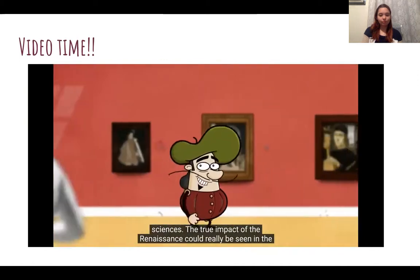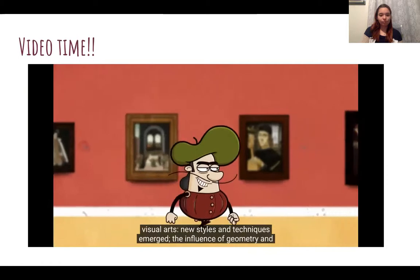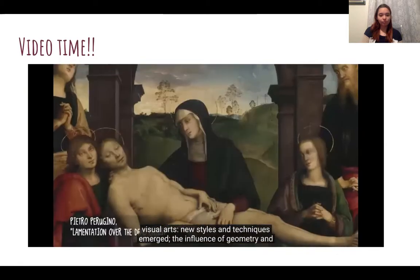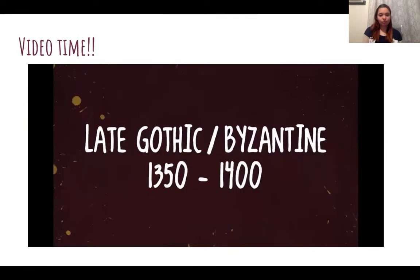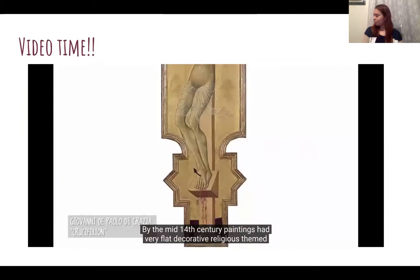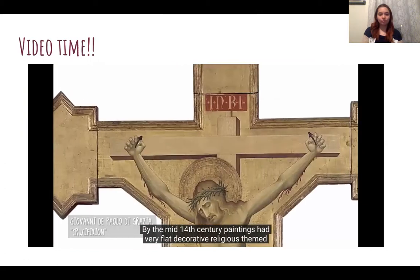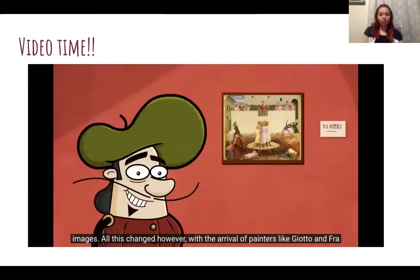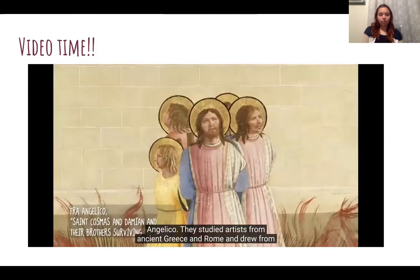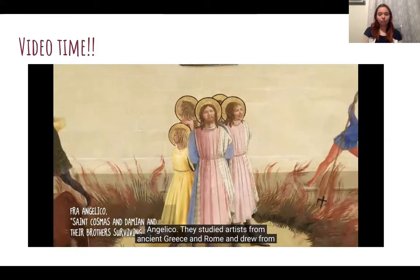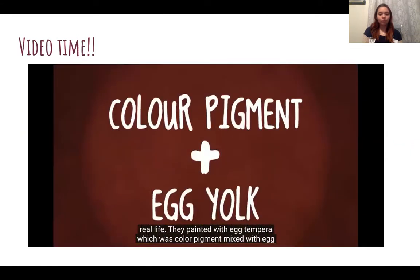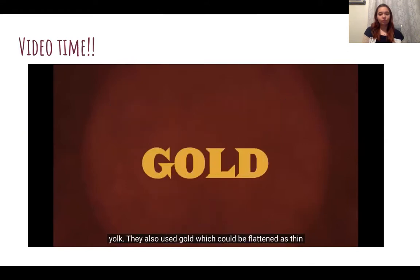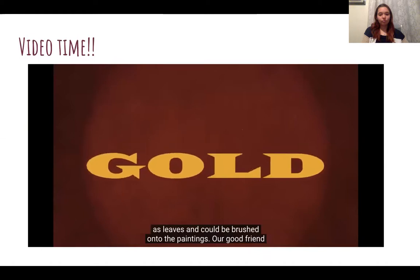The true impact of the Renaissance could really be seen in the visual arts. New styles and techniques emerged. The influence of geometry and mathematics could be seen as artists strived for perfection. By the mid-14th century, paintings had very flat, decorative, religious-themed images. All this changed with the arrival of painters like Giotto and Fra Angelico, who studied artists from Ancient Greece and Rome and drew from real life. They painted with egg tempera — colour pigment mixed with egg yolk — and also used gold, which could be brushed onto the paintings as thin as leaves.